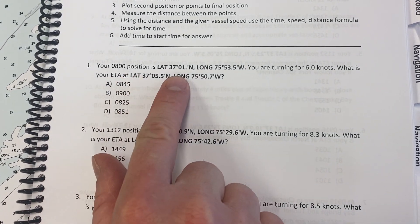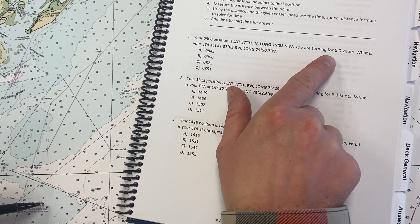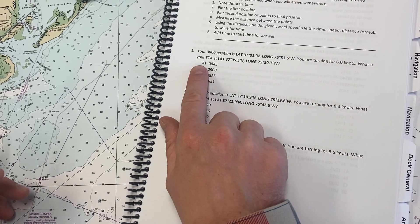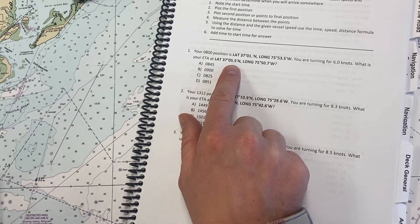It says at 0800, this is our position, which I've gone and already plotted that. It says we're cruising for six knots, so we know our speed. It says, what is the ETA, estimated time of arrival to this position, which we've also plotted up.